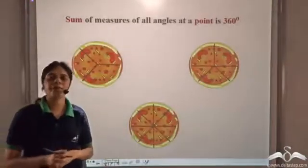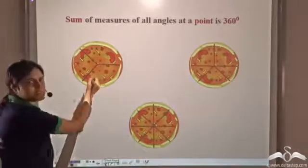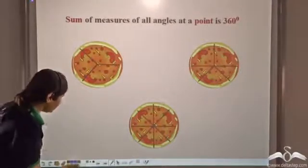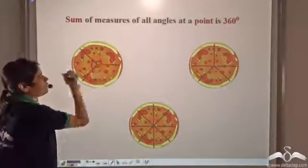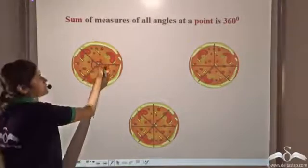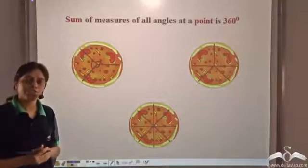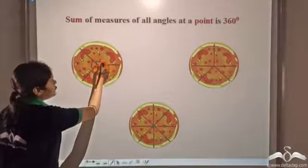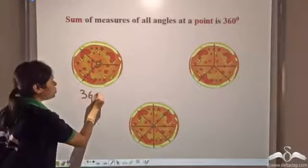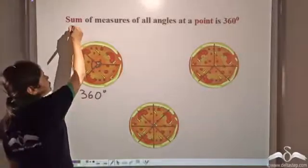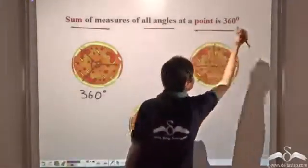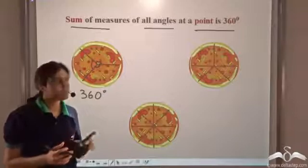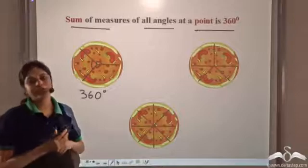And this holds for the entire pizza as well. So, you take a pizza, mark a point, and cut it into different slices from that point. We see that different angles are being formed. These three angles indicate one complete rotation. One complete rotation is equal to 360 degrees. So, we can say that the sum of these three angles is equal to 360 degrees. Or, we can say that the sum of measures of all angles at a point is 360 degrees. So, we take a point and draw any number of angles from that point — the sum of measures of all the angles will be 360 degrees.